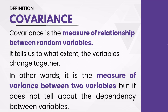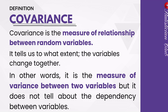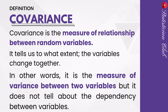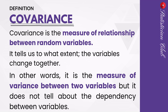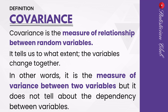But covariance does not tell about the dependency of variables. You can find only how variables vary with each other using covariance, but you cannot find any dependency between two variables with covariance. To calculate dependency, you can use regression.